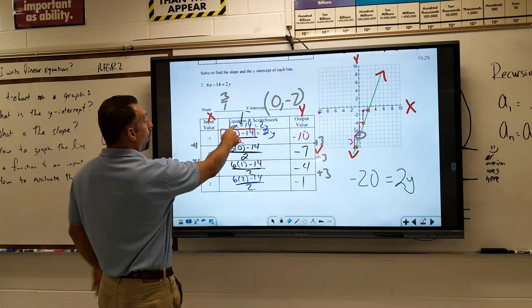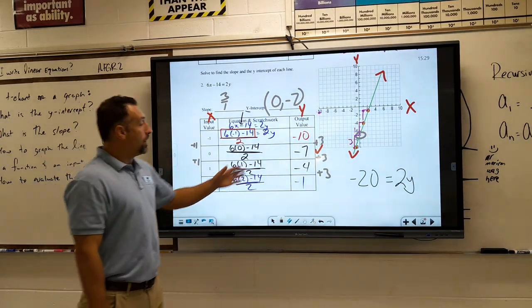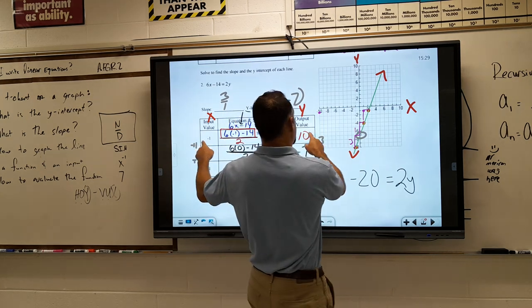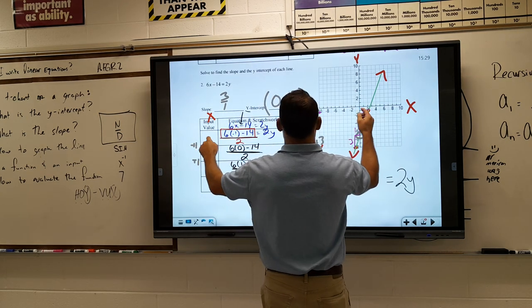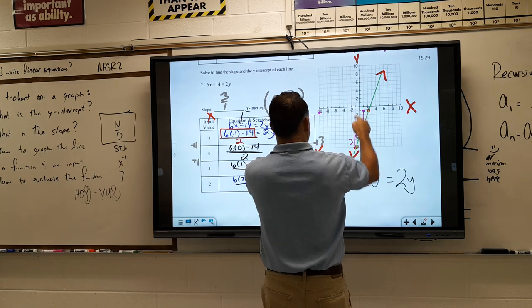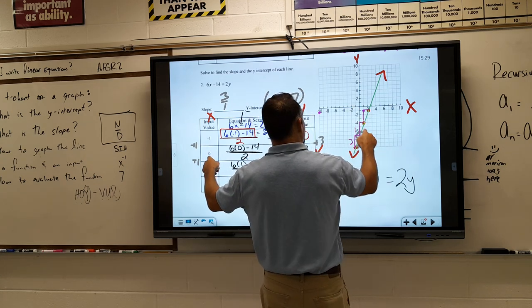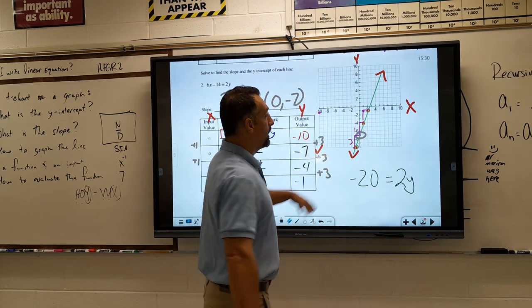The plug-in point was still where x was. We plugged in -1, 0, 1, and 2 and got these outputs. We did the same thing—they plotted these points. x is the left and right, so you go left 1 and then down 10. Then we went 0, down 7—that's also our y-intercept. Then we connected the dots.